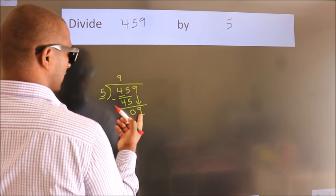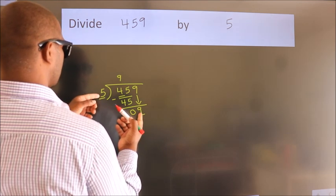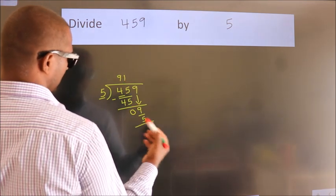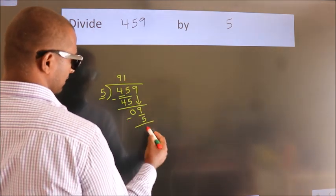A number close to 9 in 5 table is 5 ones, 5. Now we subtract. We get 4.